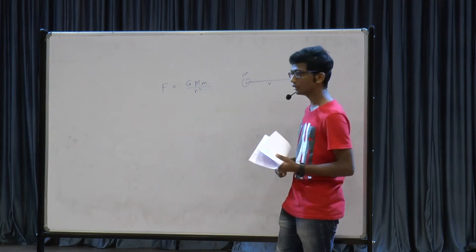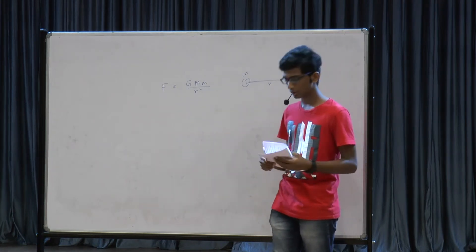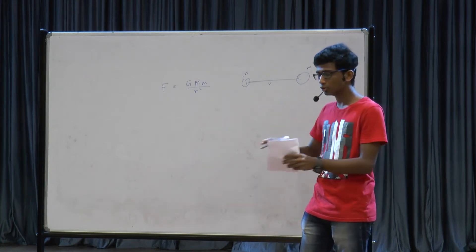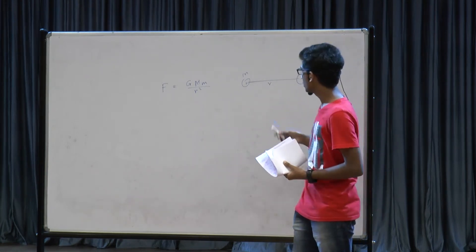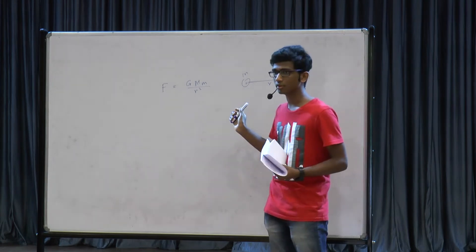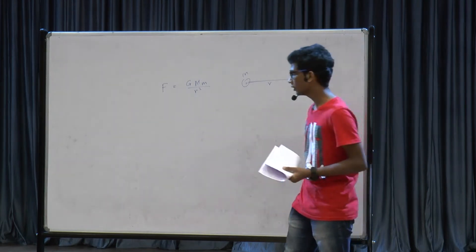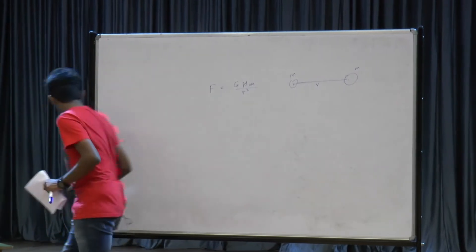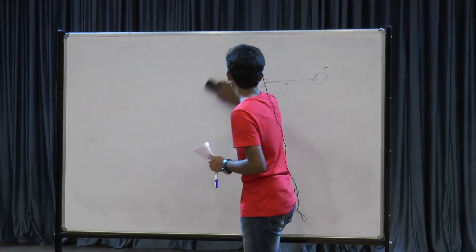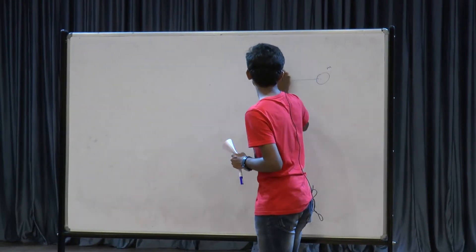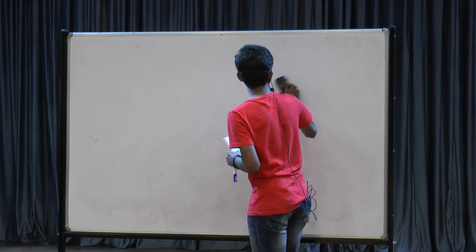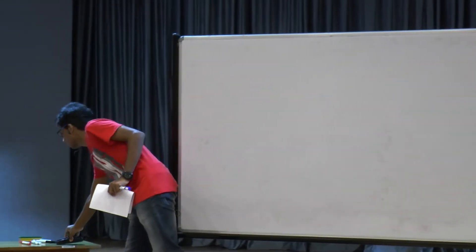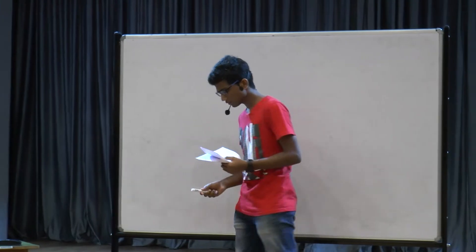This law is universal in the sense that every two objects in the universe attract each other by this force. Using this law of gravitation, we can derive the orbit of planets around the Sun.